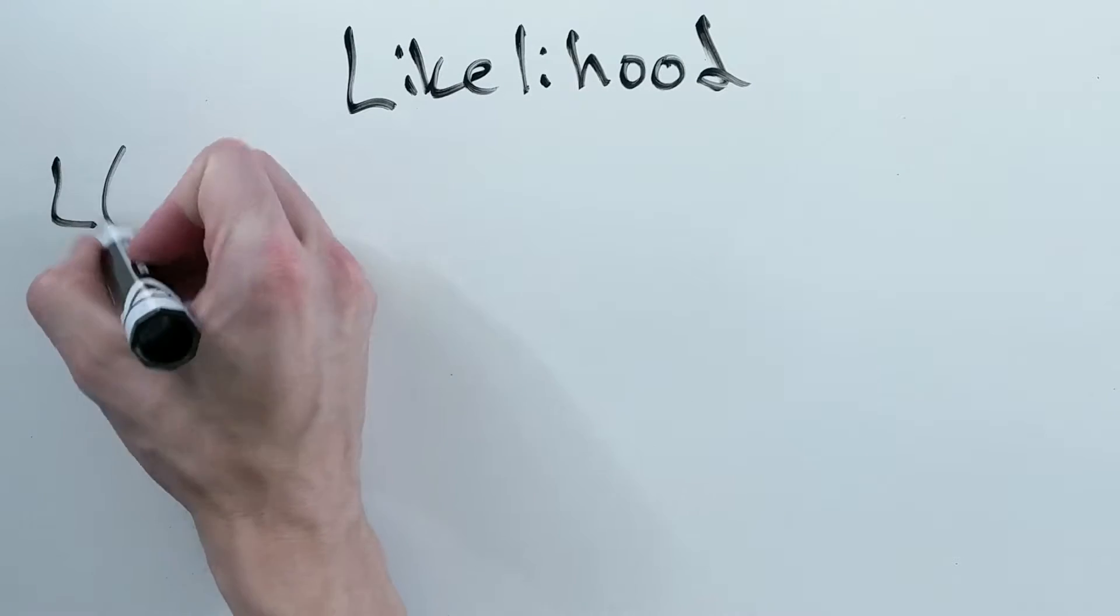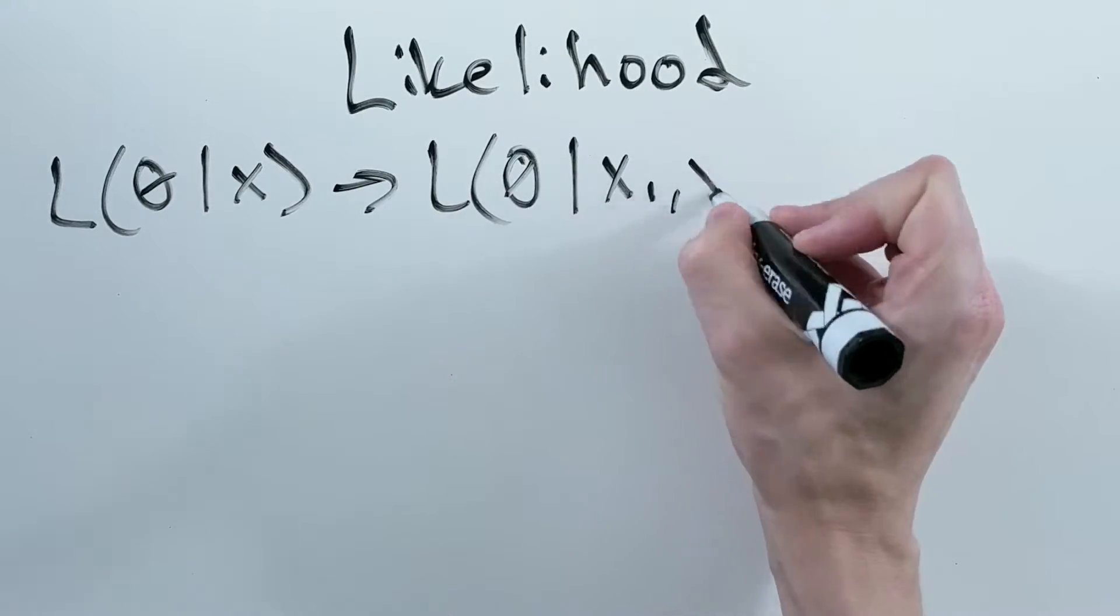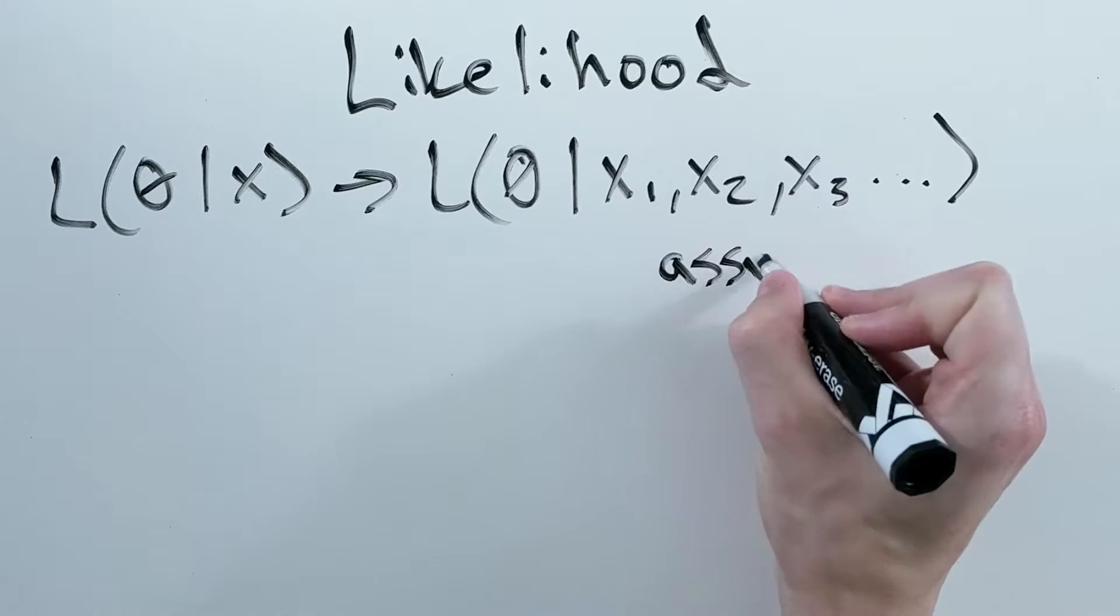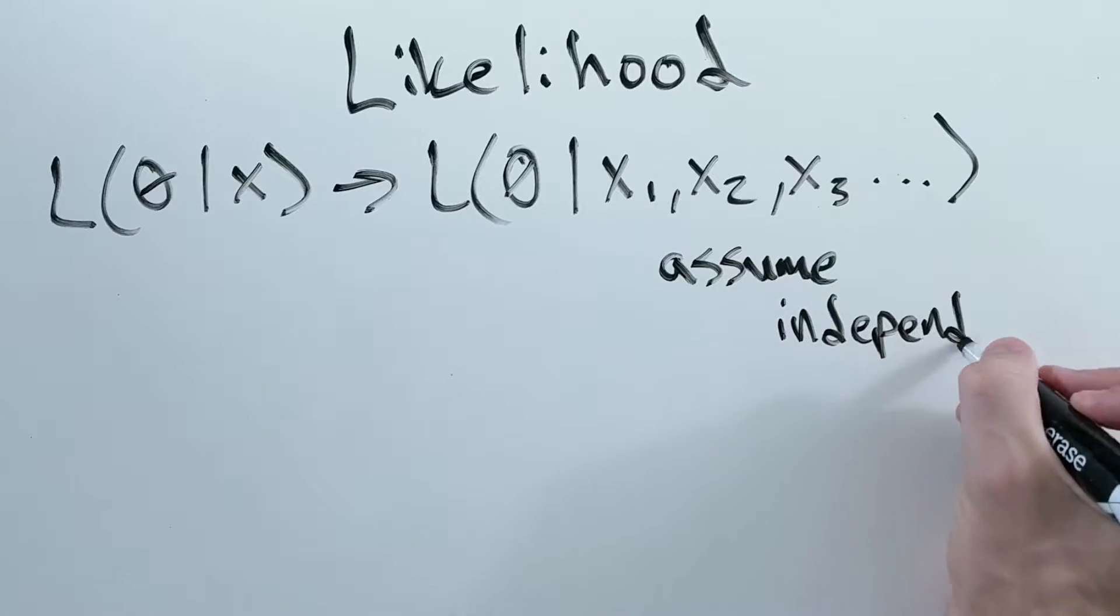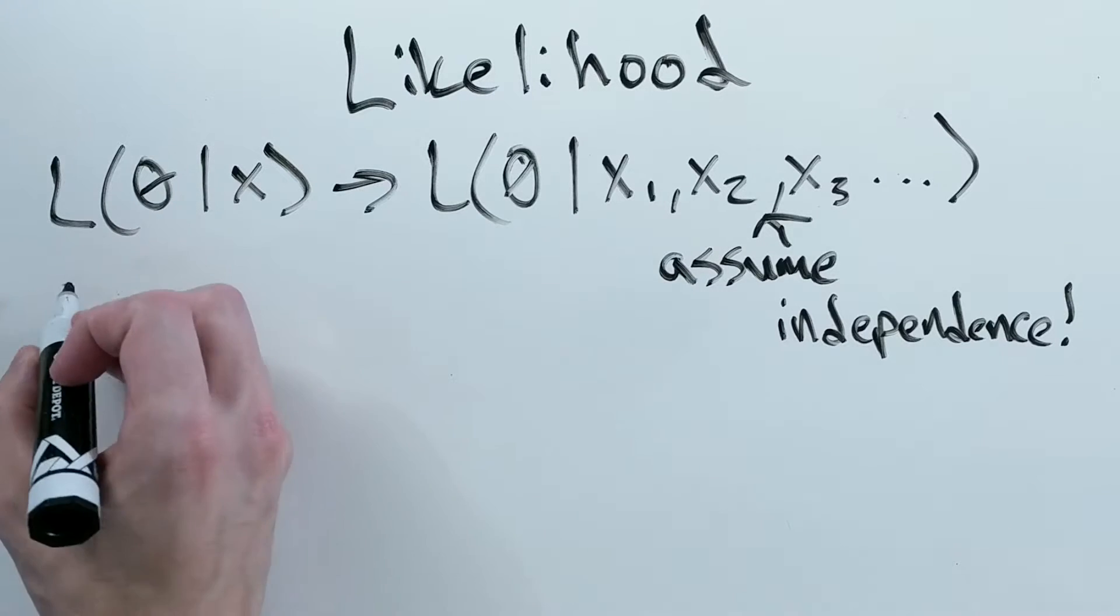However, normally when we are calculating likelihood, we want to know the joint likelihood that the model has some parameters given a set of data points. Typically, we assume that each point is independent and identically distributed, meaning that where each point is doesn't depend on where the other points are, and that one model describes where each point is.